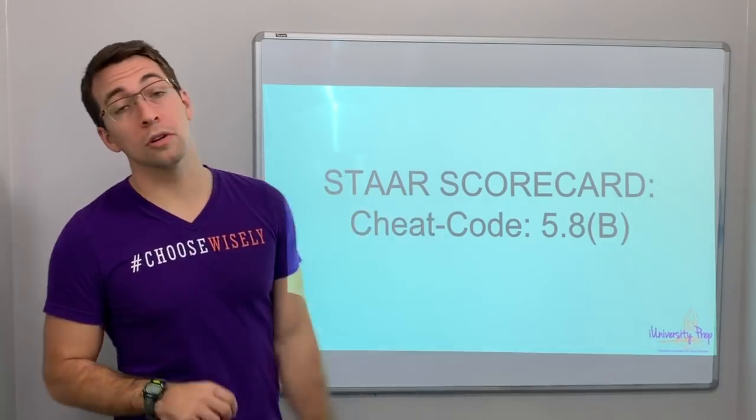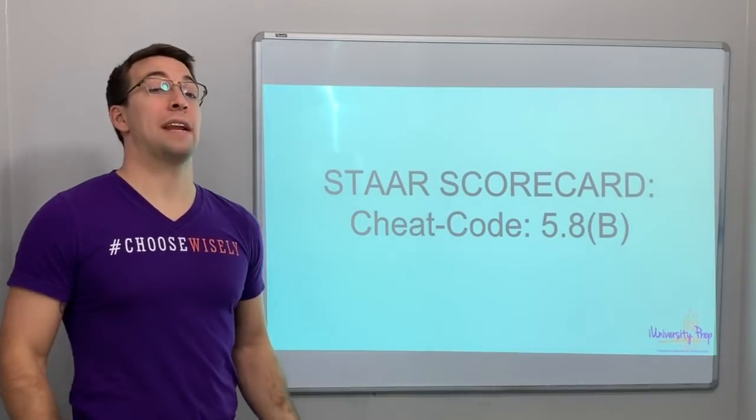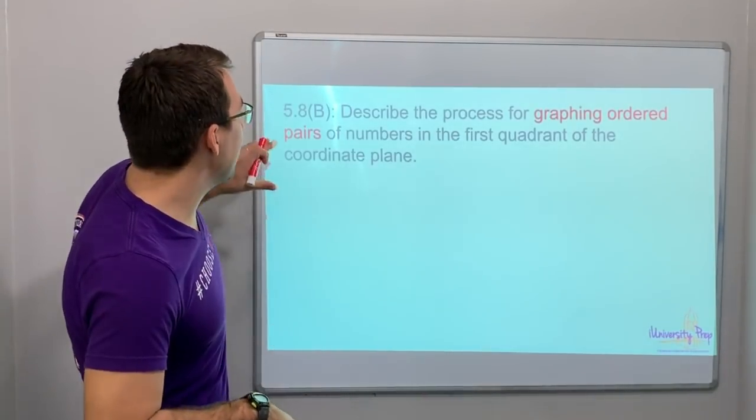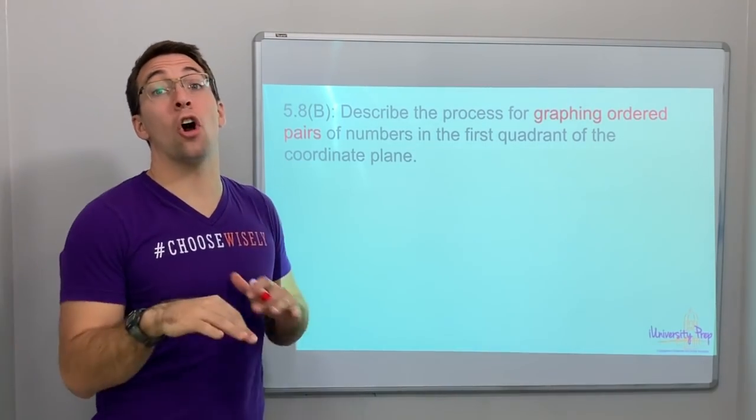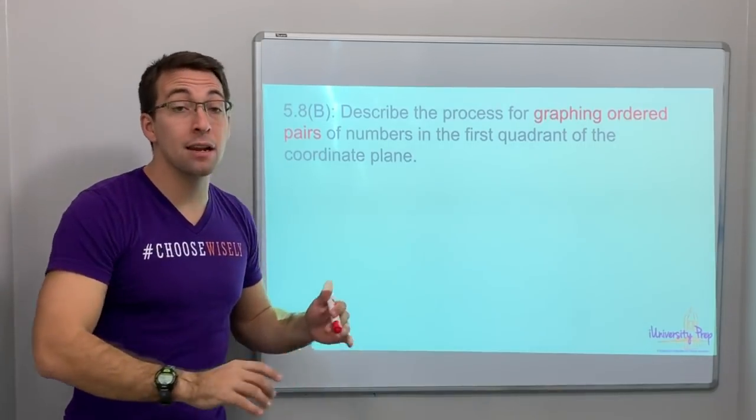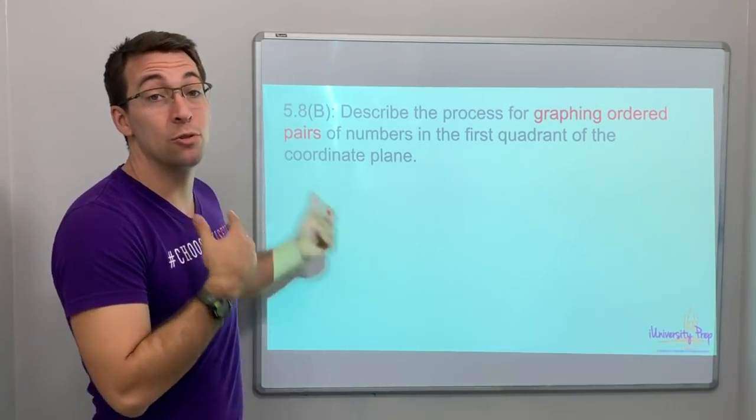Hello everyone, STAAR scorecard, TEKS 5.8B. Okay, so what is this TEKS talking about? Remember that 5.8A, B, and C are all about graphing ordered pairs. They're all about the coordinate plane, about knowing how to graph.